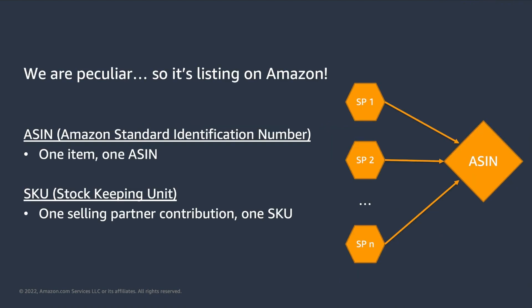As we like to say at Amazon, we are peculiar and so is listing on Amazon. One of the peculiarities regarding listings is the concept of ASIN, the Amazon Standard Identification Number. An ASIN is a 10-character long identifier assigned to products. This number is unique to products in the Amazon catalog, which means that the same item, even if it's being offered by different selling partners, will have the same ASIN.